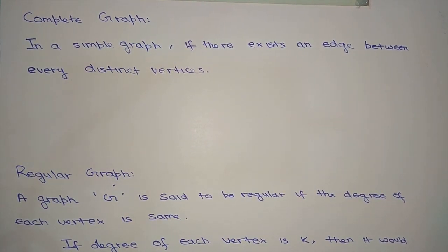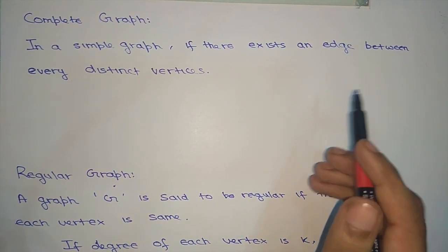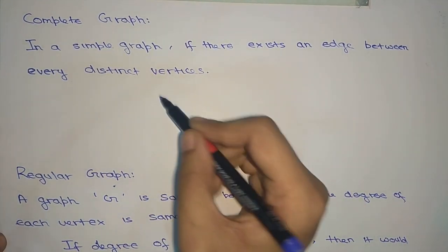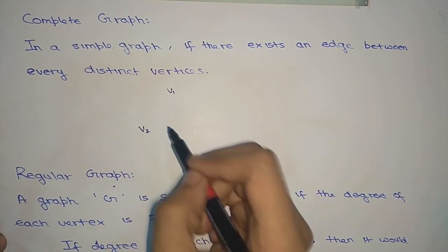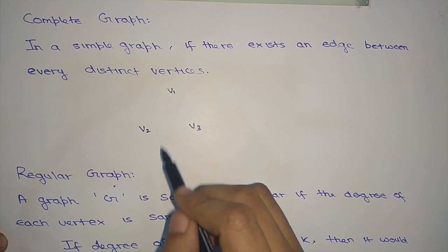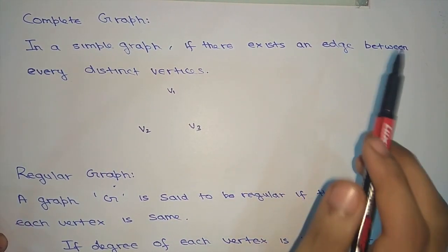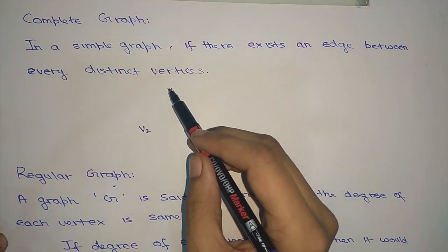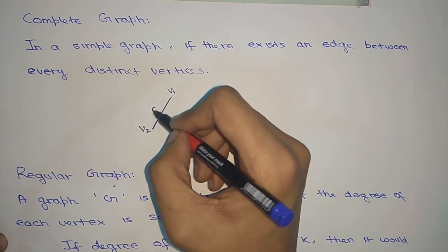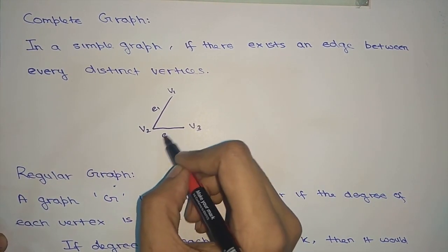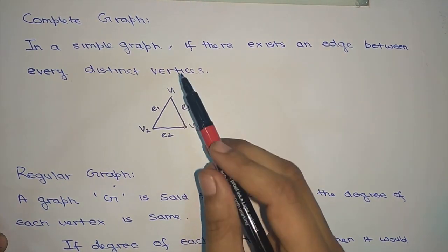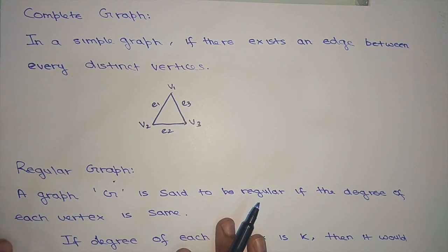A complete graph: in a simple graph, if there exists an edge between every pair of distinct vertices, it is said to be a complete graph. For example, given three vertices V1, V2, and V3, all of these vertices must be connected with each other. There has to be an edge E1 between V1 and V2, an edge E2 between V2 and V3, and an edge E3 between V1 and V3. Since each and every pair of vertices has an edge between them, this is a complete graph.